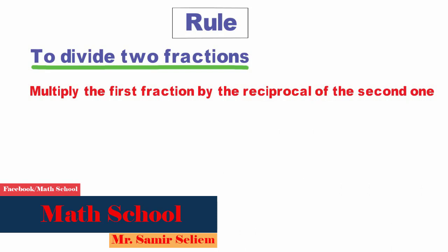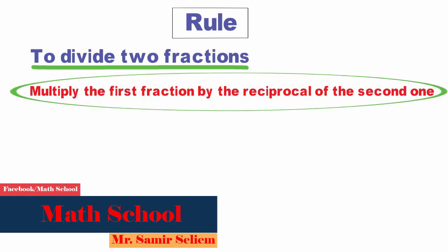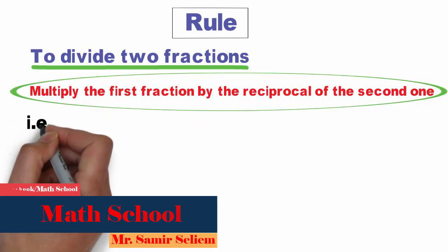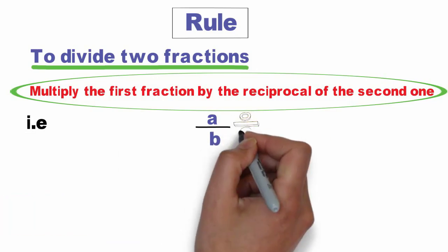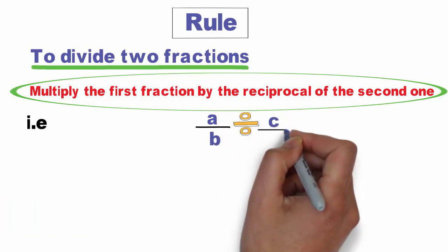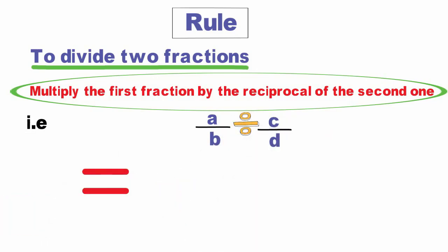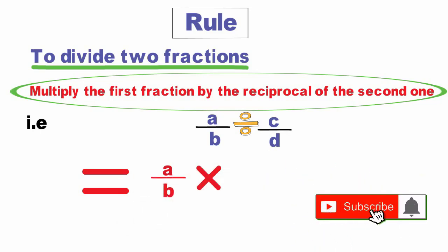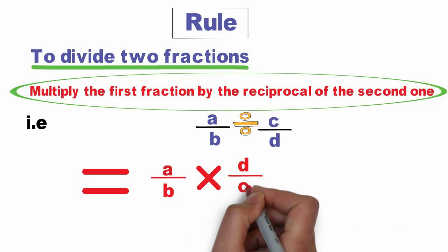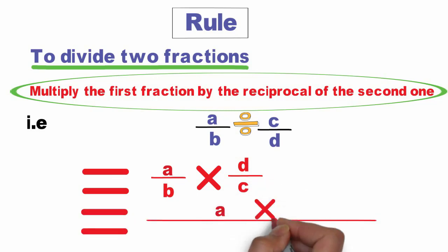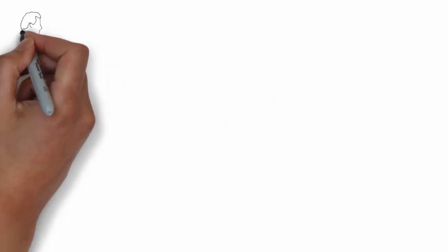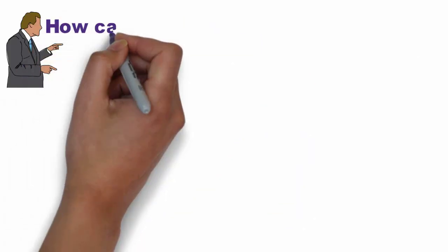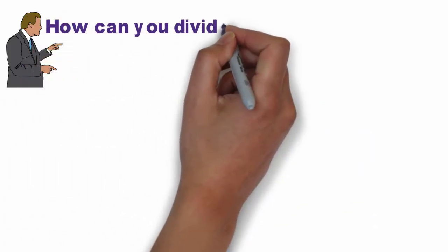We can deduce the rule: to divide two fractions, just multiply the first fraction by the reciprocal of the second. In other words: a over b divided by c over d — keep a over b, multiply by the reciprocal of the second, which is d over c, and the result equals a times d over b times c.